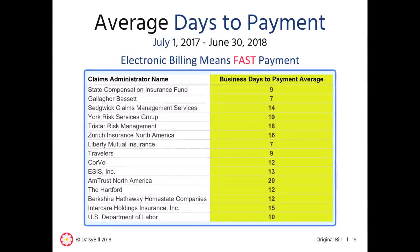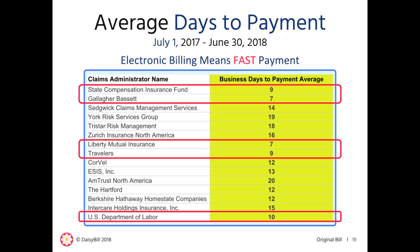This table represents the average days to payment for our top 10 largest claims administrators by volume of bills for the past 12 months. Because Daisy Bill electronically submits bills directly to all clearinghouses, most payers on average send payment to Daisy billers well within the required 15 working days. Some of these large payers, on average, submit payment to Daisy Bill clients in 10 days or less. Bottom line: when done correctly, workers' comp electronic billing works.